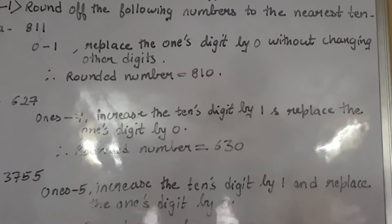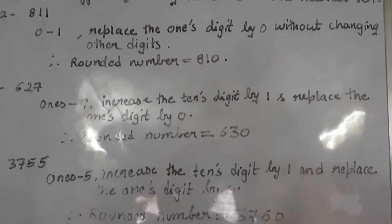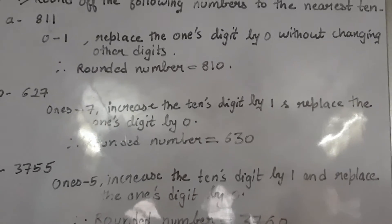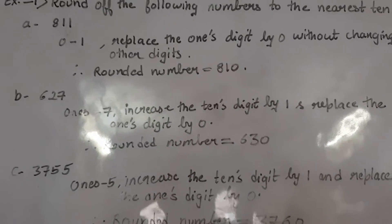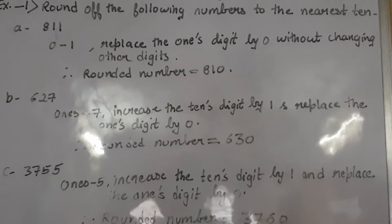So replace the 1's digit by 0 without changing other digits. So after rounding what you will get? You will get 810. In place of 1 you will write the 0. Because the number is less than 5.